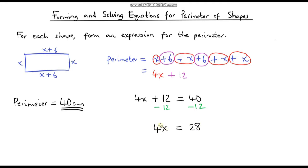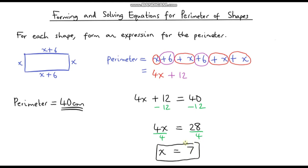So if 4 lots of x equals 28, what does 1 lot of x equal? We're just going to divide both sides by 4. On the left-hand side we're left with x — 4 divided by 4 is 1, so that cancels out. And 28 divided by 4 is 7. So our answer is x equals 7.